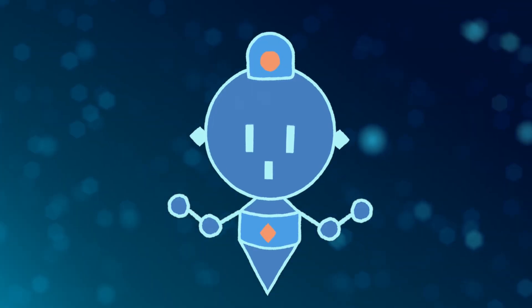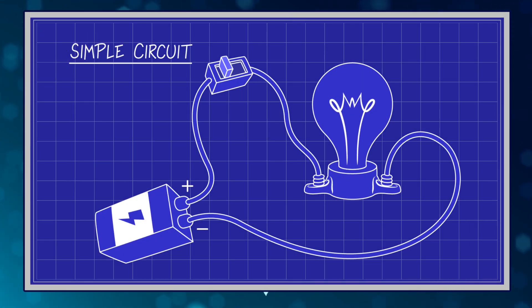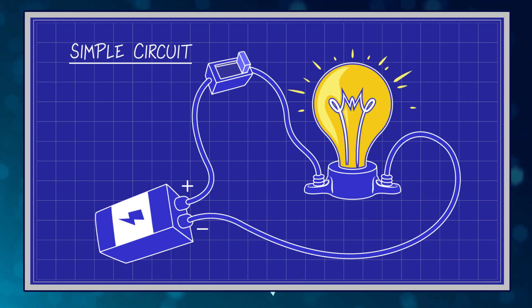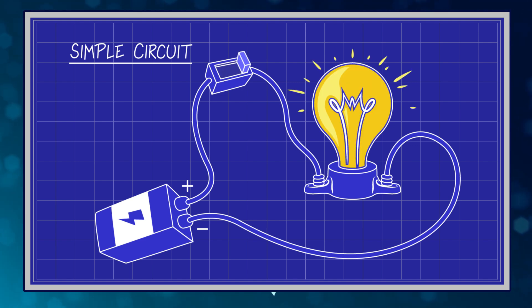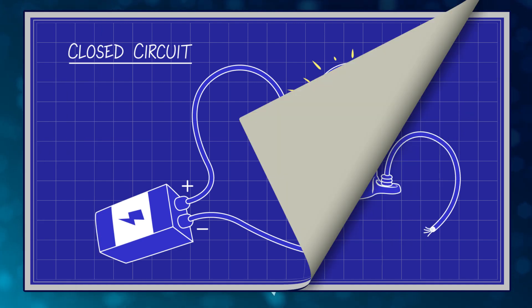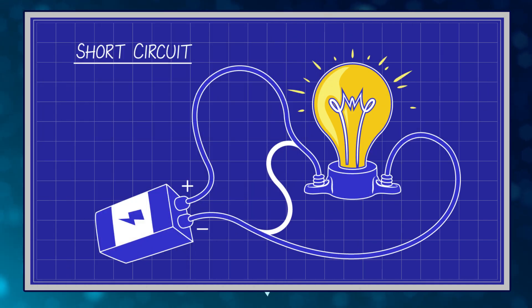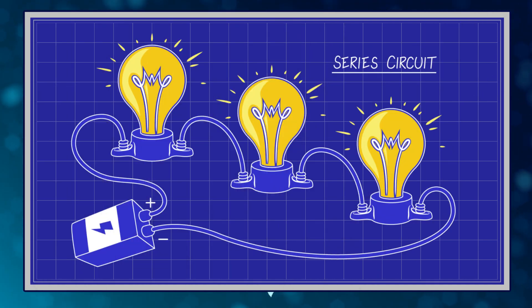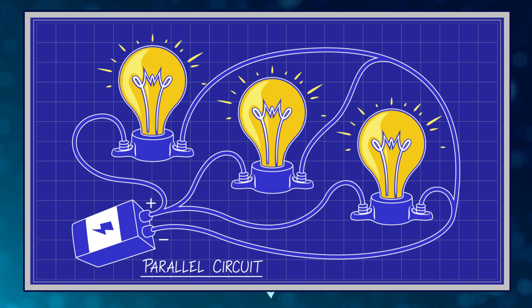A circuit is a way to get electricity from one point to another along a closed path. For electricity, there are all kinds of circuits: simple circuits, closed circuits, open circuits, short circuits, series circuits, parallel circuits.